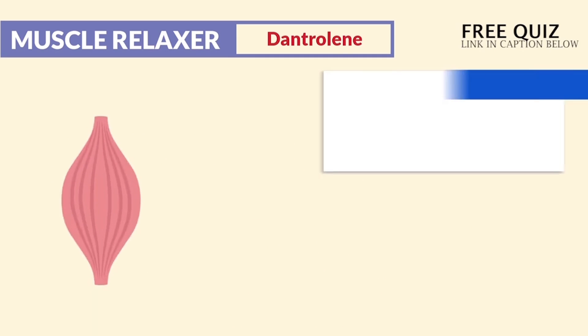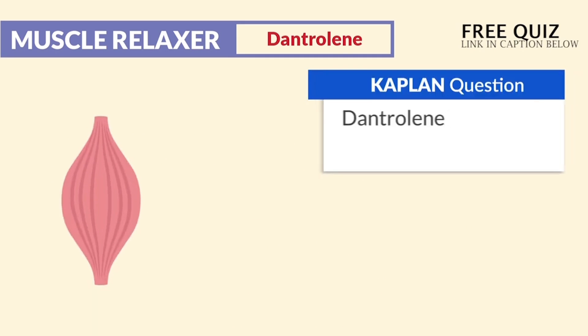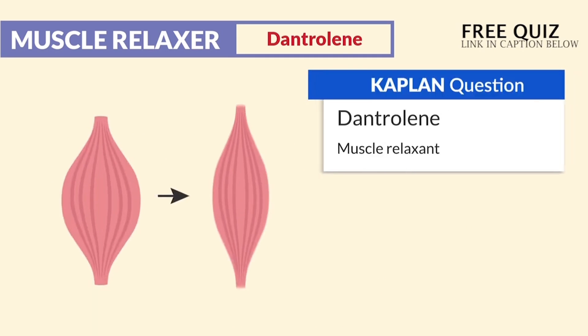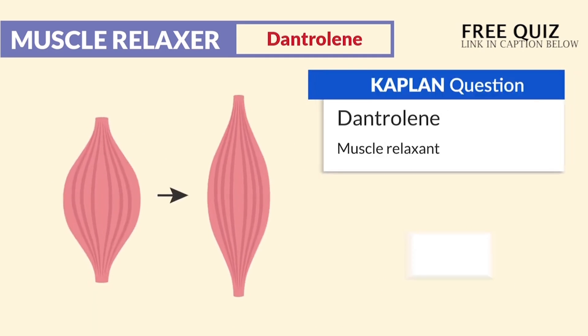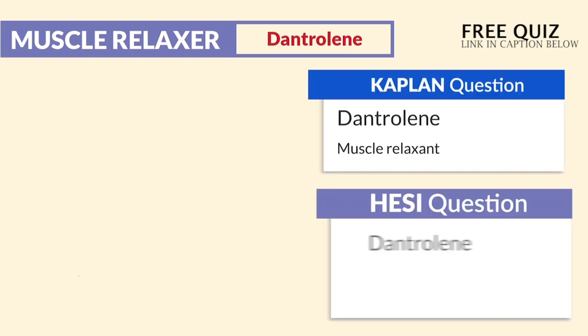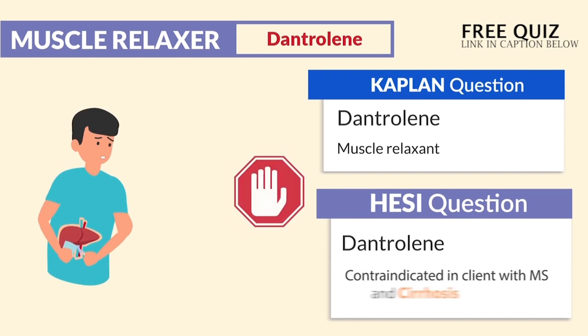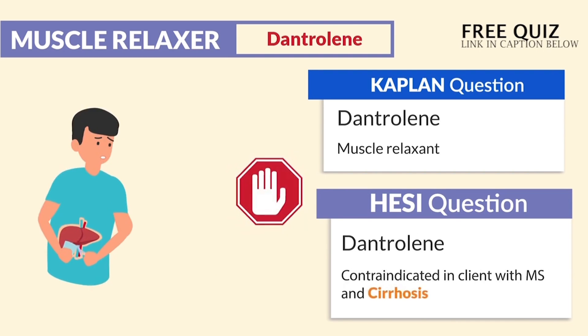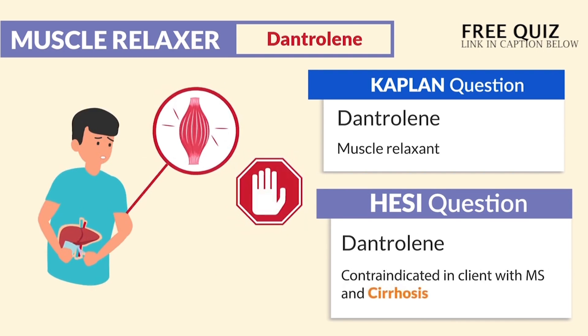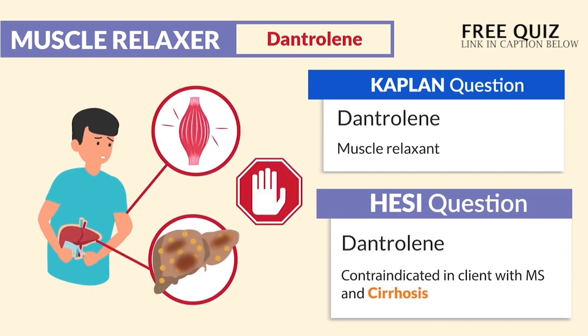Kaplan says dantrolene is a muscle relaxant. And Hesse says dantrolene is contraindicated with MS and cirrhosis. The key word here is cirrhosis — just think 'scarrhosis.' We have a scarred liver.